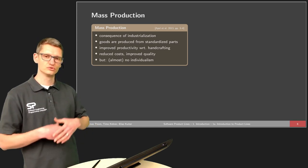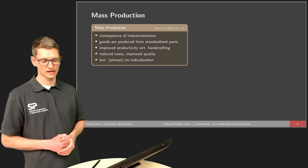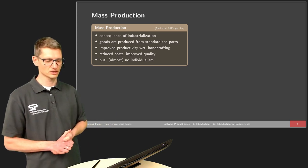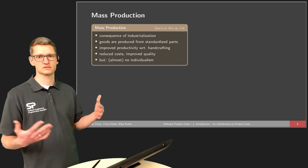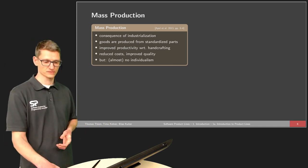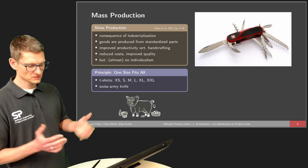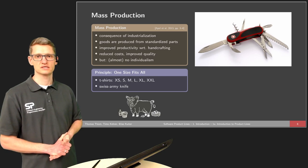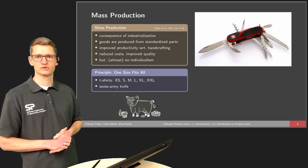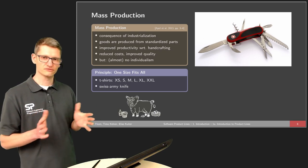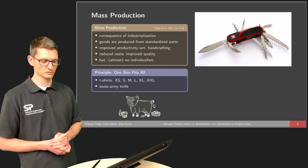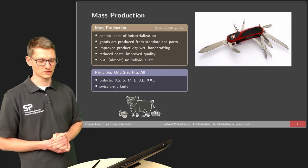The goal of mass production was to improve productivity compared to hand crafting or customization, giving us reduced costs and improved quality through standardized parts. Companies can build standardized components and focus on them only. But we have almost no individualism in mass production. The principle behind mass production is one size fits all. For t-shirts there are different sizes, but if you don't fit into a regular size, you probably have a problem — there might not be a perfect one, unlike a wedding dress.